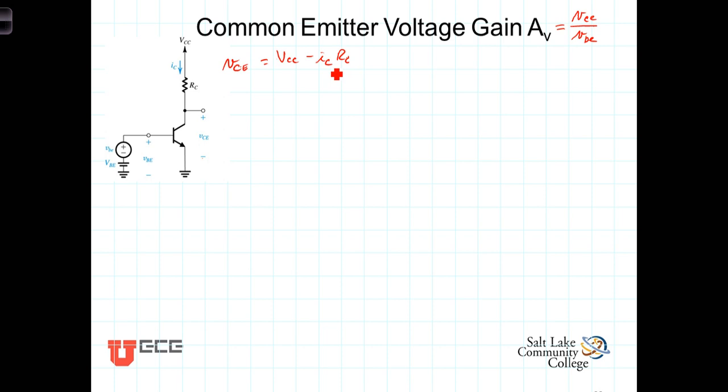Now if we replace I sub C, again remembering that I sub C, the total current in the collector, is equal to the bias current plus the small signal current I sub C. We can replace I sub C with that and then we get VCC minus I sub C plus little i little c times R sub C.